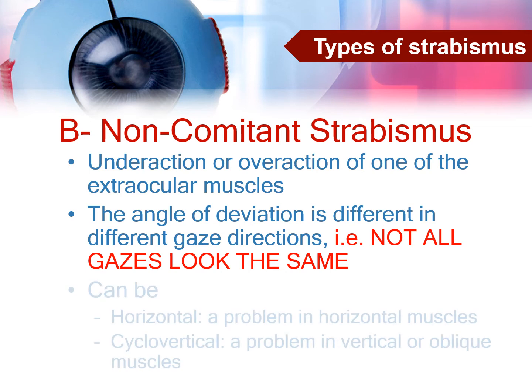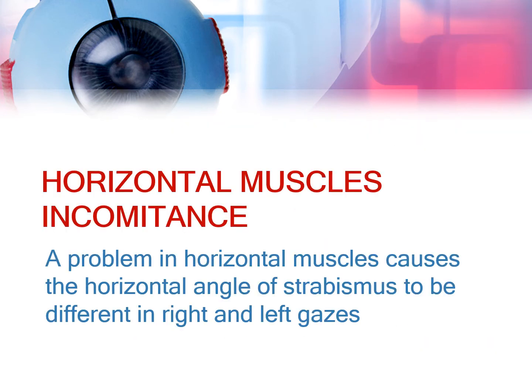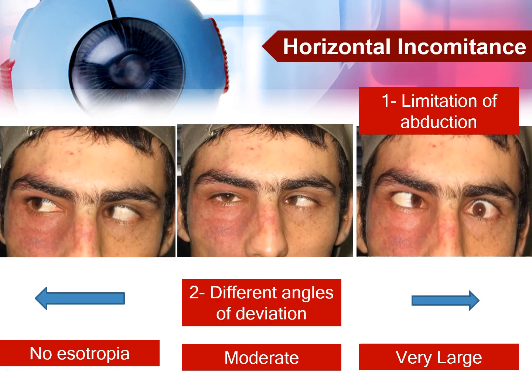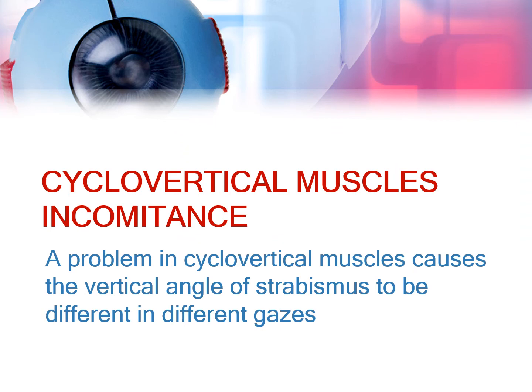Non-comitant strabismus can affect the horizontal muscles or the cyclo-vertical muscles. In horizontal incomitance, there is a problem in the horizontal muscles that causes the horizontal angle of strabismus to be different in right and left gaze. In this patient with limitation of abduction of the left eye, the angle of strabismus increases on gaze toward the direction of limitation — that is, left gaze — and decreases or disappears on gaze toward the normal side.